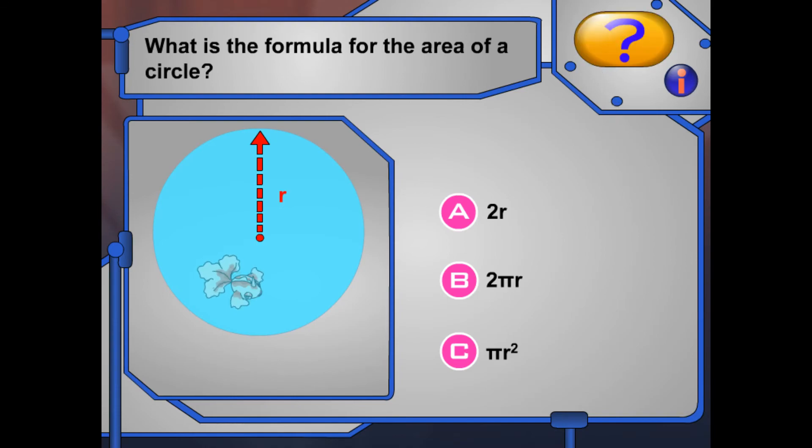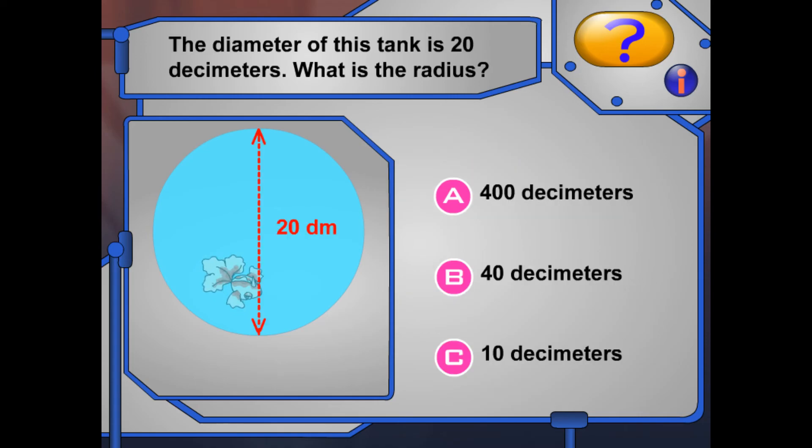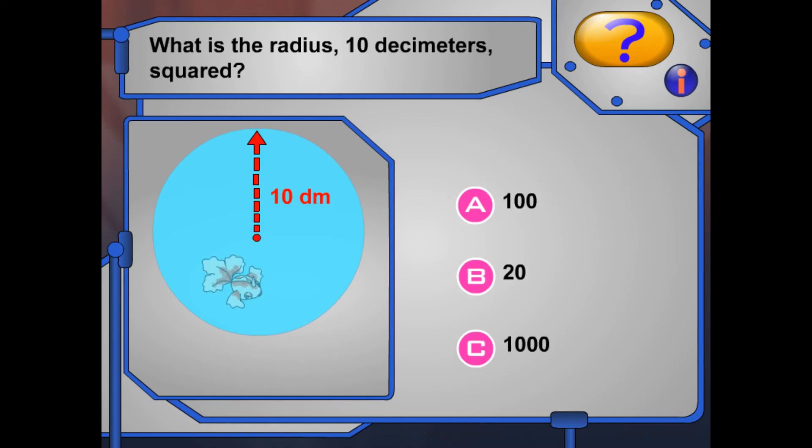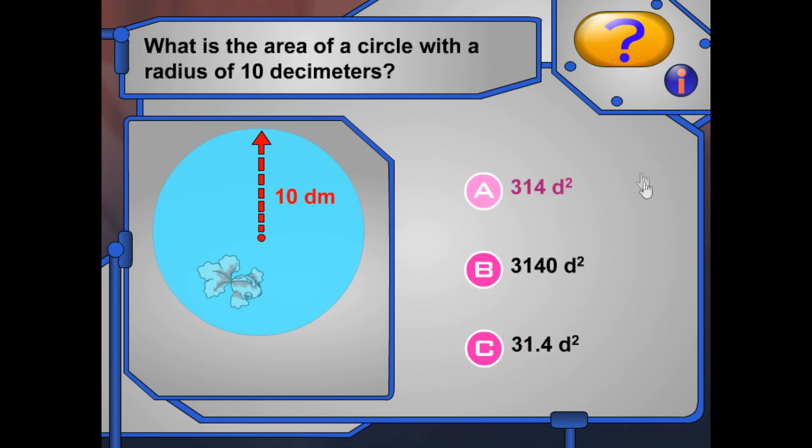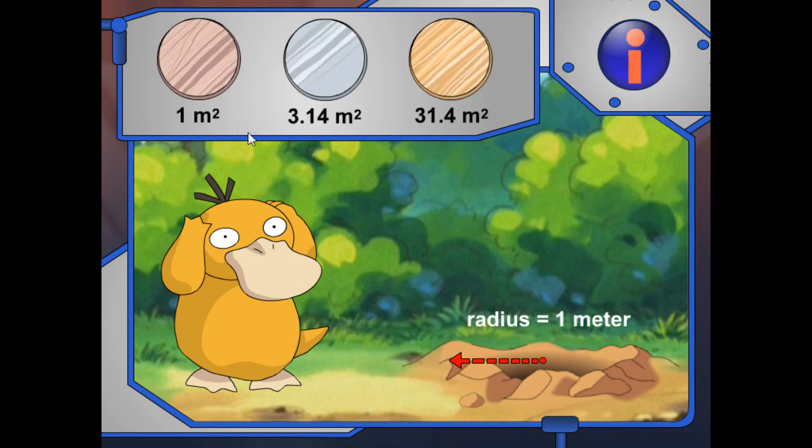Remember, the area of a circle is found by squaring the radius. Try again! The radius is half the length of the diameter of a circle. The diameter is twice the length of the radius. When you square a number, you multiply it by itself. Remember, the area of a circle is found by squaring the radius. Wrong circles just won't stay in place. Help Psyduck! Fill these holes with more circles! Try again!